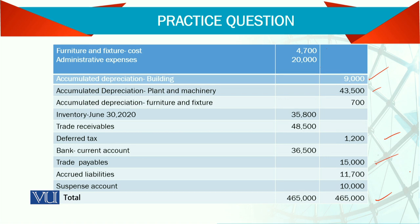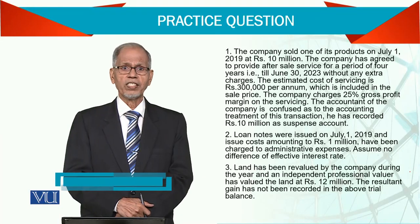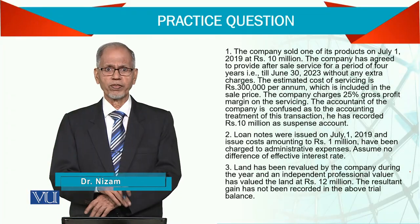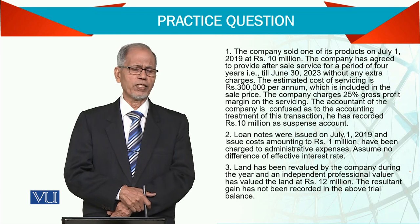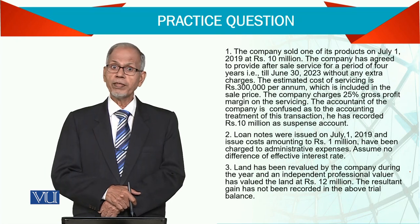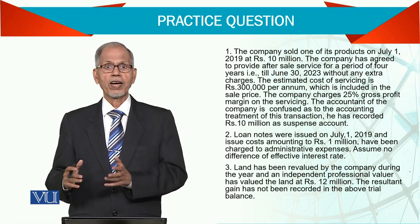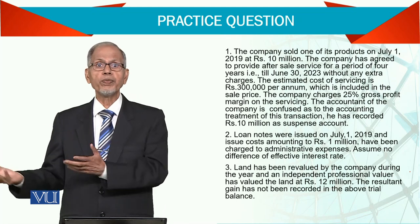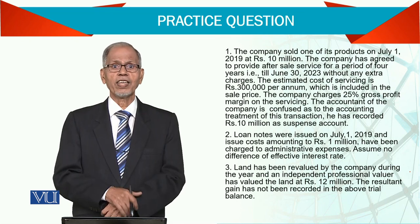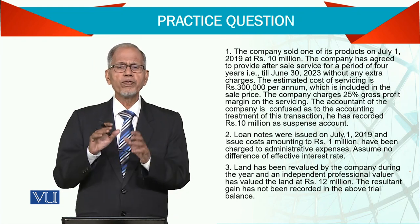Now after this trial balance, we have some adjustments. These adjustments are basically items which need to be taken care of before we prepare the financial statements, because they arise afterwards. For example, you are using electricity today, say 31st December. The bill is not there — it will come after 15 days. So it does not mean you can wait 15 days and then prepare the accounts.